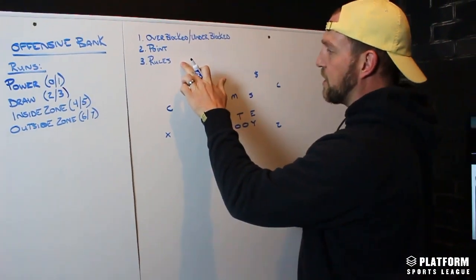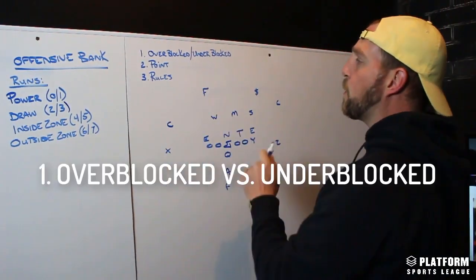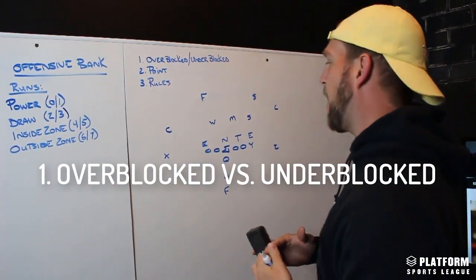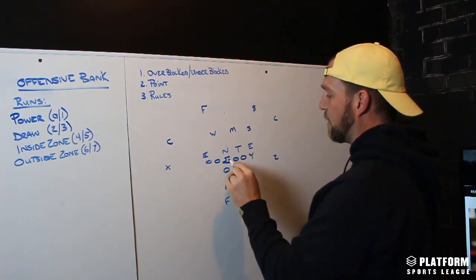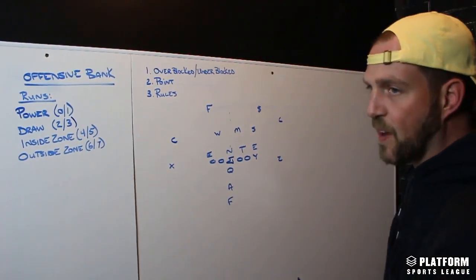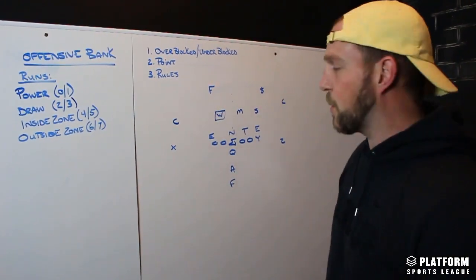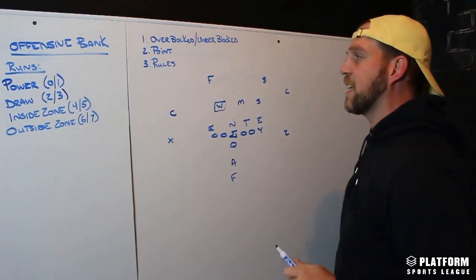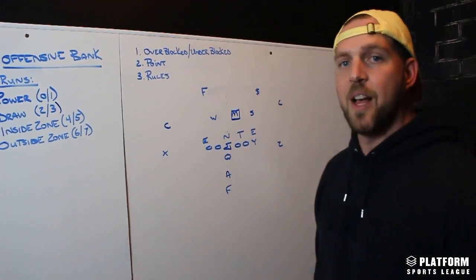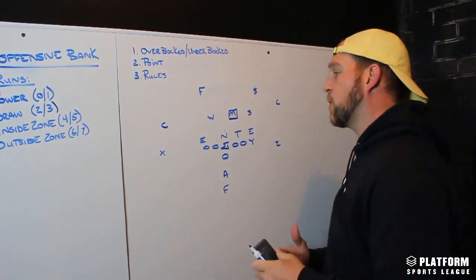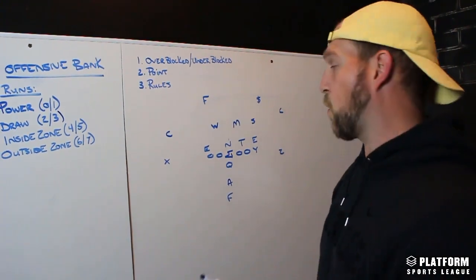Every play is going to follow three quick progression steps and we'll have an answer for everything on this board. Number one: is it an over-blocked or under-blocked play? The point is what the center identifies — the most important defender, where everybody is working off of. If we call this play to the right and the point is to the left or behind the center line, that's an under-blocked play. If the point is on the right side of the formation, that's an over-blocked play. It's tremendously important for the whole offense to understand where the point is.